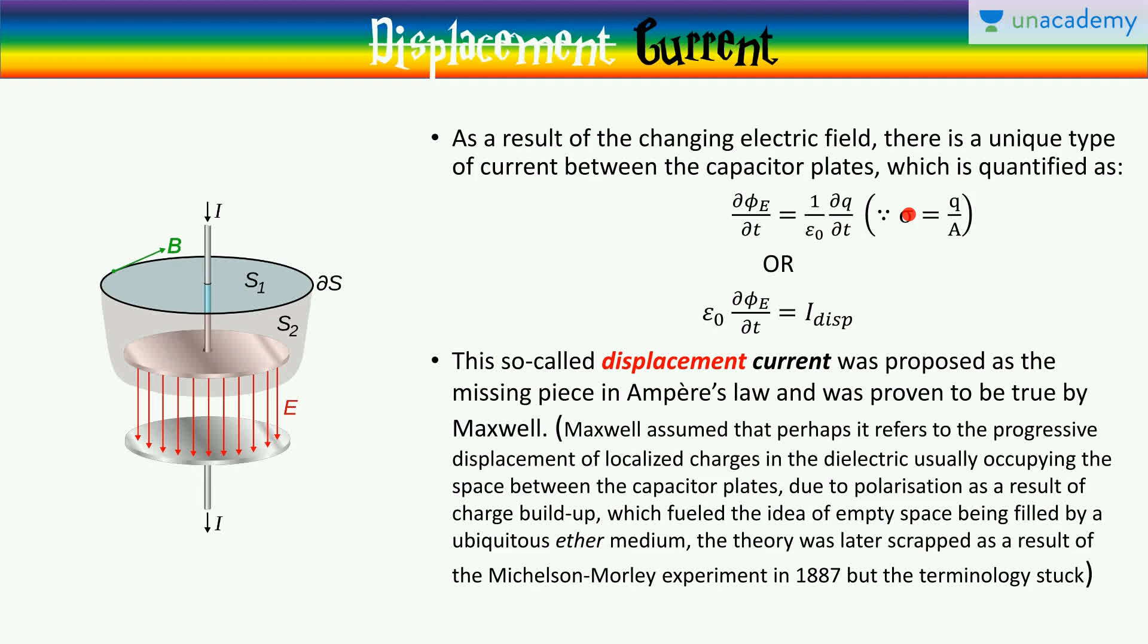So, A in the denominator and A in the numerator are going to cancel out. So, you will have just q by epsilon naught. So, the rate of change of electric flux is nothing but 1 by epsilon naught dq/dt, where dq/dt is the current. It's not just the normal current that we are used to. It's a special type of current, which we shall call the displacement current given by epsilon naught d(phi_E)/dt.